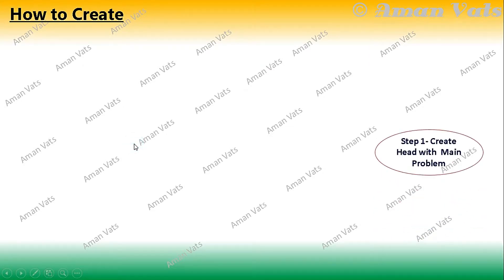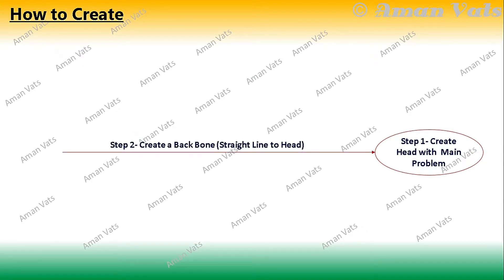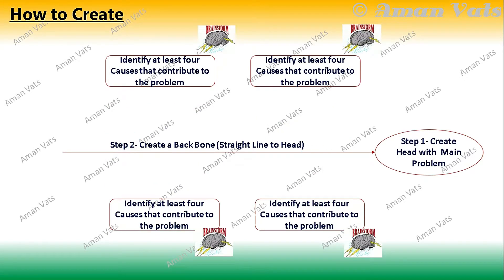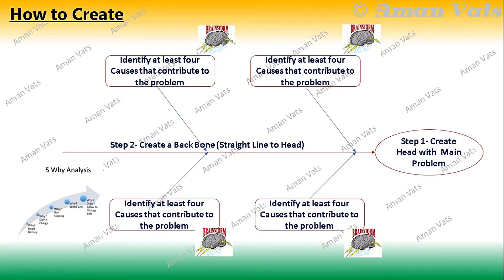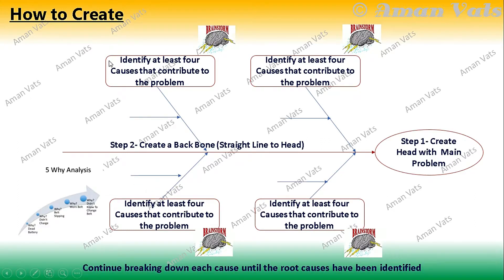To create the diagram: first, create the head with the main problem. Step 2, create a backbone — a straight line leading to the head. Step 3 and 4, identify at least four causes that contribute to the problem on various aspects and join them. You can also use other analytical tools instead of brainstorming to arrive at these causes. Then you need to subdivide each problem further.